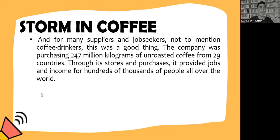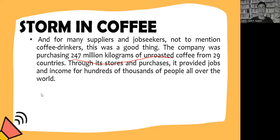Through its stores and purchases, Starbucks provided jobs and income for hundreds of thousands of people all over the world. Just imagine 247 million kilograms of unroasted coffee beans from 29 countries — that requires a huge number of employees. But then disaster struck. In 2012, Starbucks made headlines after Reuters investigations showed that the chain had not paid much tax to the UK government, despite having almost a thousand coffee shops and earning millions of pounds in profit there.